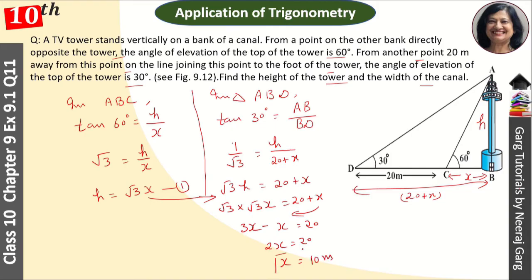We put the X value here, so H = √3 × 10, which equals 10√3 meters. This is H.